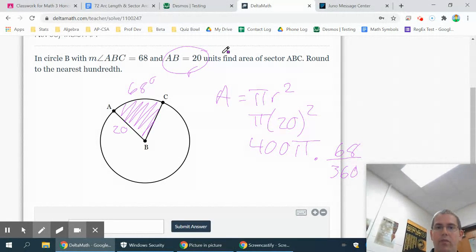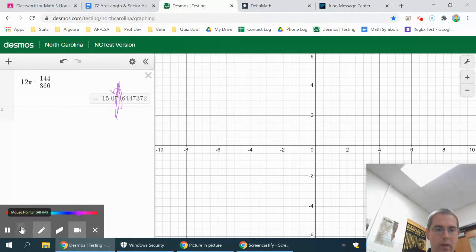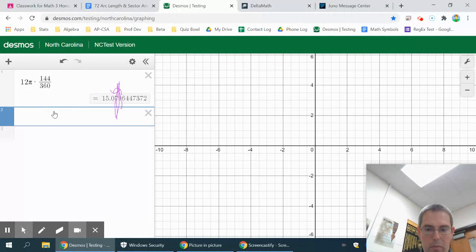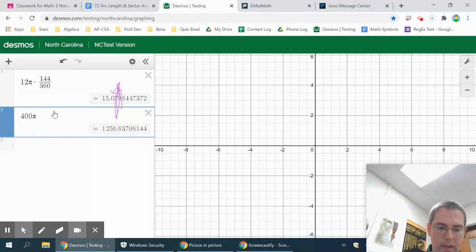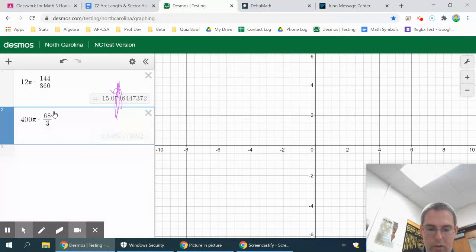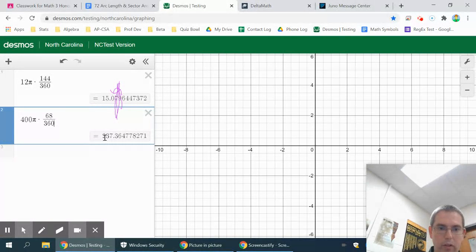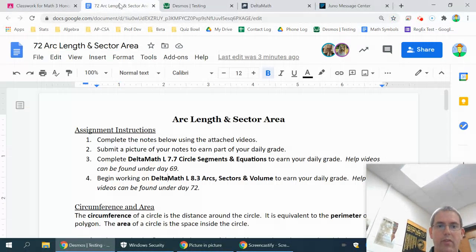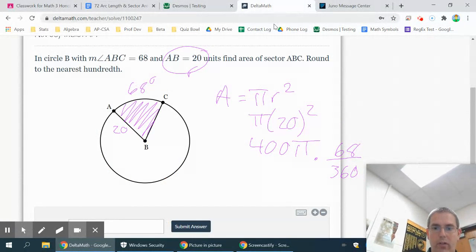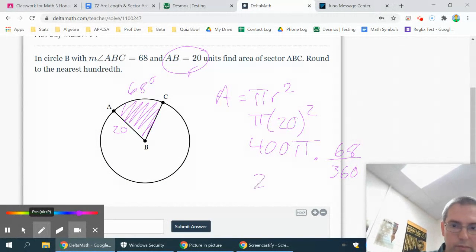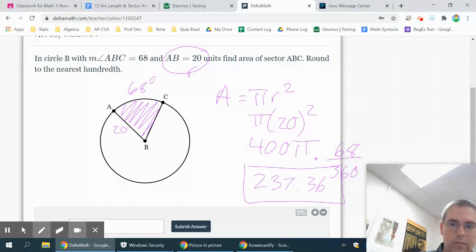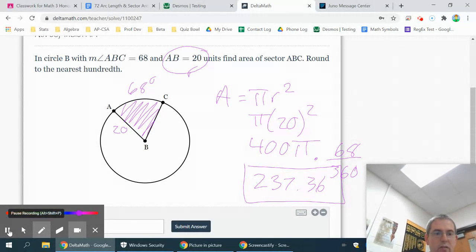Okay, time for Desmos. Here we go. So 400π times 68 over 360 is 237.36. So 237.36 should be your answer. And that gives you the information that you need to solve this one.